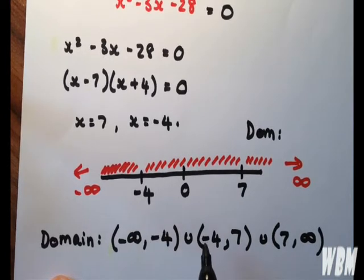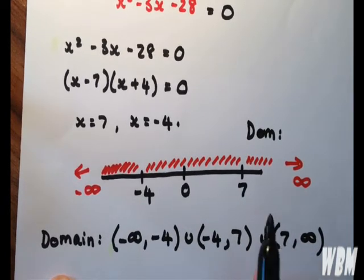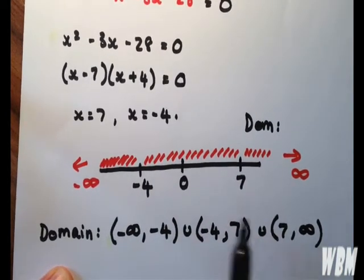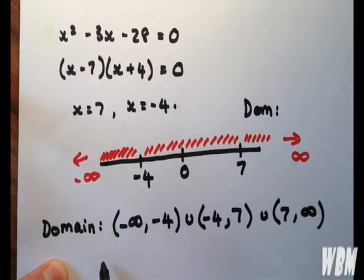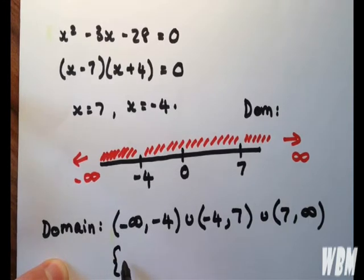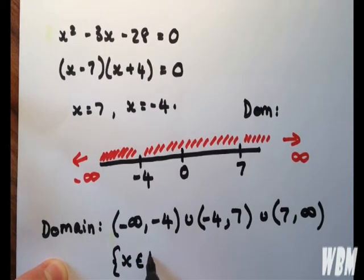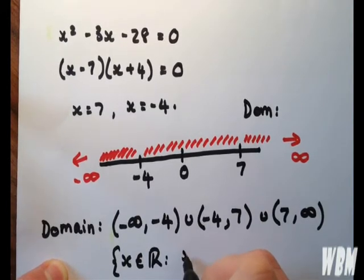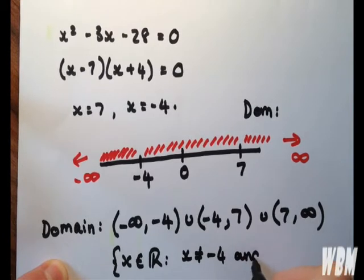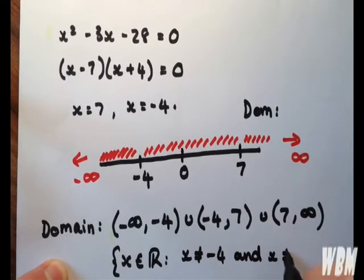This includes the three intervals of the domain. We can also write it as the set of real numbers, excluding when x is minus 4 and x is 7.